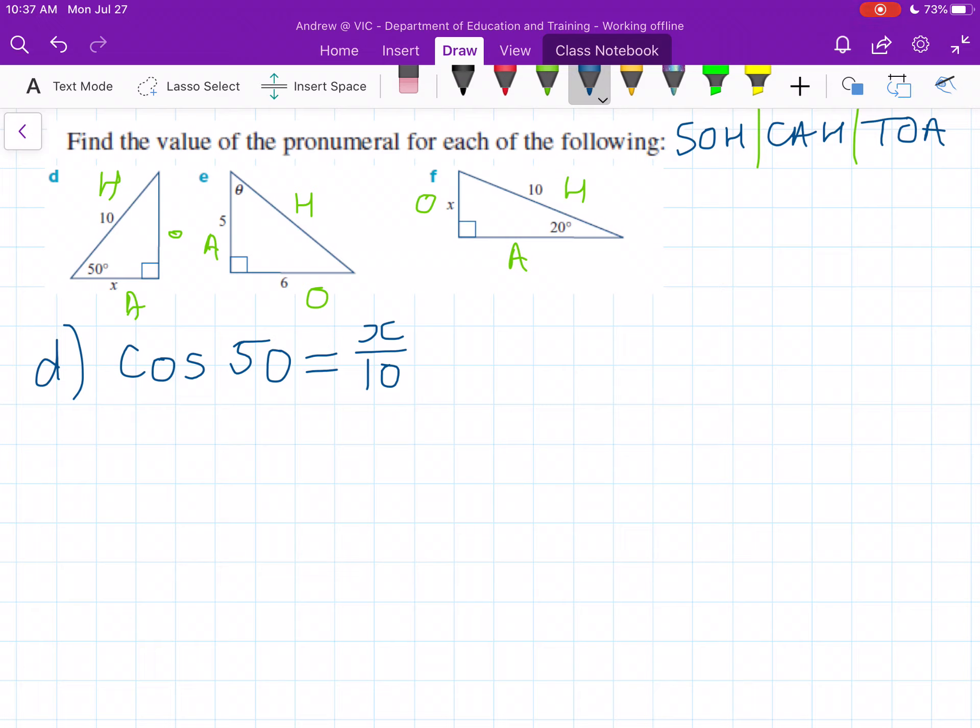Now because our angle is given in degrees, make sure that your calculator is in degrees setting, or else this won't work for you and you'll get the wrong answer. We just need to rearrange our equation, so multiply both sides by 10. This becomes 10 times cosine 50 equals x. Here you should get an answer of 6.42788. It's always good to check your calculator's in the right setting—degree and radian. Make sure you look that up if you don't know how to change it.